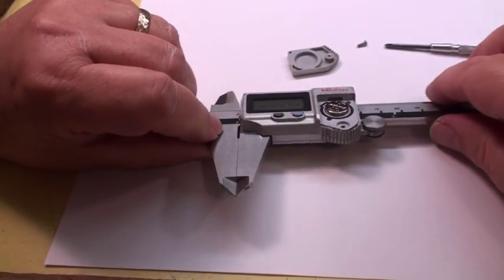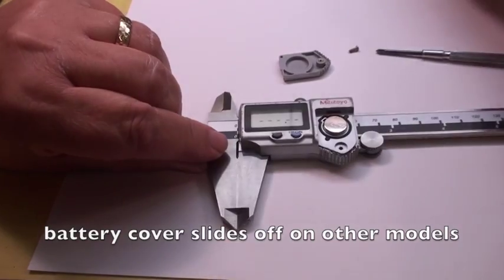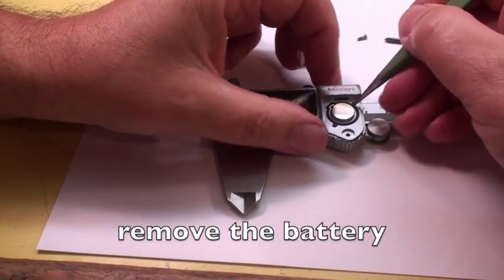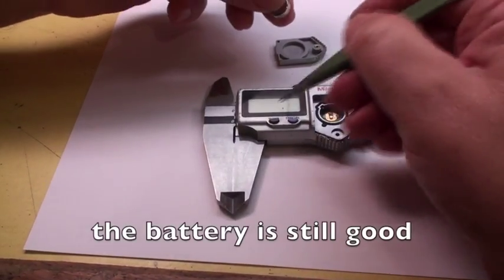Sometimes the battery cover slides out. It has something to do with whether it's waterproof or not. Here we're going to pop out the old battery. The battery is still good apparently because it was blinking.